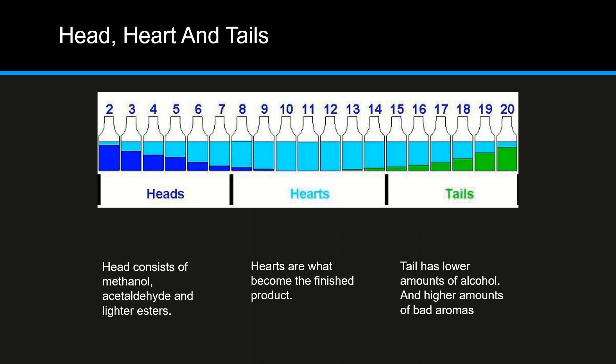Once the still master makes the first cut, it eliminates the heads. The heads are generally either disposed of or redistilled to collect more alcohol from them. After the distiller decides the quality of the incoming distillate is good enough to keep for drinking purposes, they cut to the hearts. The hearts are ultimately what become the finished product — they contain the bulk of the ethanol we want, along with the flavors and aromas that make our spirit unique.